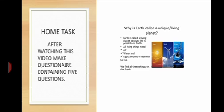Why is Earth called a unique or a living planet? Earth is called a living planet because life is possible on Earth. Now we all know that all living things need air, water and right amount of warmth to live, and we find all these things on Earth.